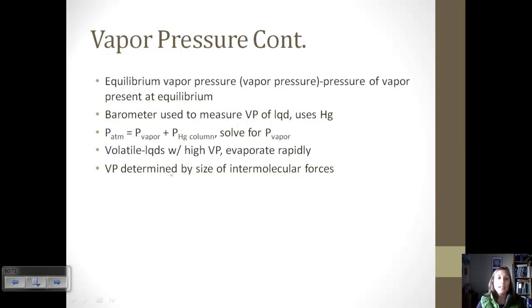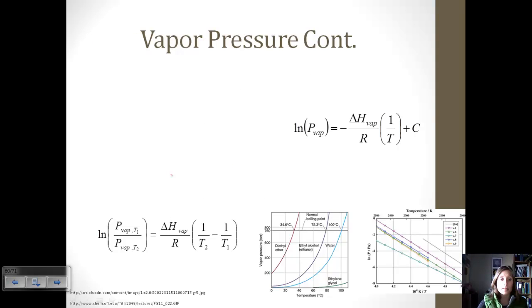Vapor pressure is determined by the size of the intermolecular forces. Really strong intermolecular forces have a low vapor pressure. You can also lower the vapor pressure if you have a large molar mass, because if we're talking about London dispersion forces, as the molar mass increases, or the molecule gets larger, the forces increase, which means higher intermolecular forces.